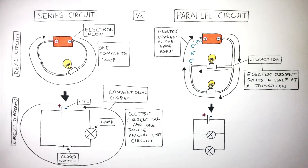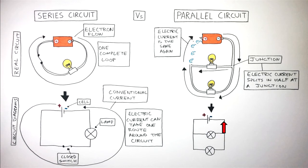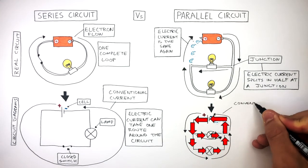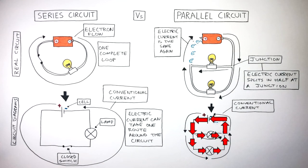In this circuit diagram of the parallel circuit, we can see how current flows out of the positive terminal, and when current flows towards the junction, the electric current splits in half. Currents take two different routes until they meet again at the next junction, when the electric current then becomes the same as it originally was at the beginning. The electrons flow back into the negative terminal of the cell. We know this is the conventional current as we're working with circuit diagrams, so in a circuit diagram the current always flows from the positive terminal to the negative terminal.